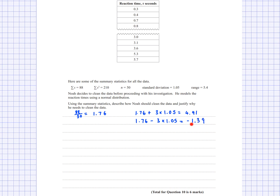Notice we can't have a negative reaction time — the fastest was 0.3 — so the lower limit isn't useful. But looking at the upper limit of 4.91, values of 5.3 and 5.7 in the table are actually outliers. We can't just assume from the table; we need this calculation to confirm it. Since he's using a normal distribution, values outside three standard deviations from the mean are considered outliers.